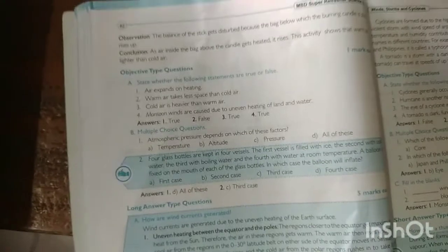Monsoon winds are caused due to uneven heating of land and water. This is true. Monsoon winds are not fixed, so this is why the heating is uneven.